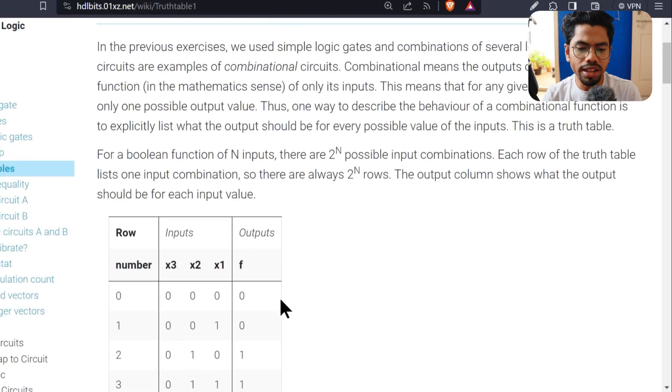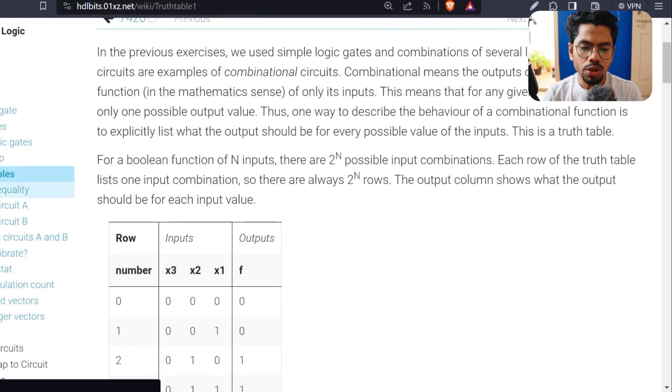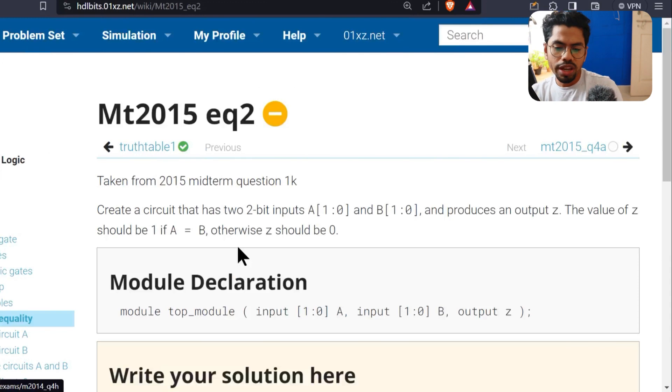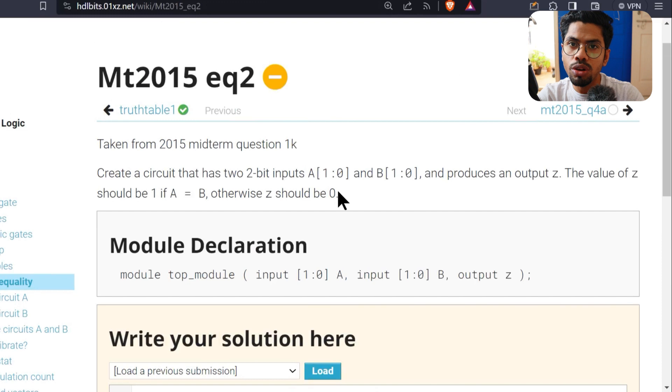If you have some doubt of K-map, please revise. It is very important for digital design. And see, we got a success message. Great. Let's do another problem today. And that is this one, two-bit inequality. So here, the simple first task could be understand the problem, what they want to tell you. They are saying choose a circuit that has two-bit input and produces the output Z. The value of Z should be 1 if A equals B. Otherwise, Z should be 0.